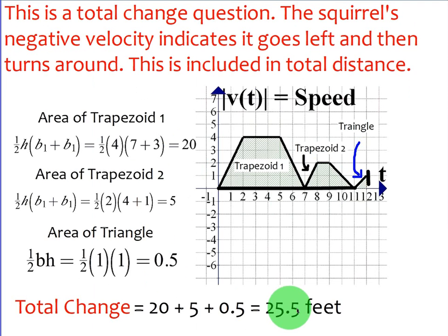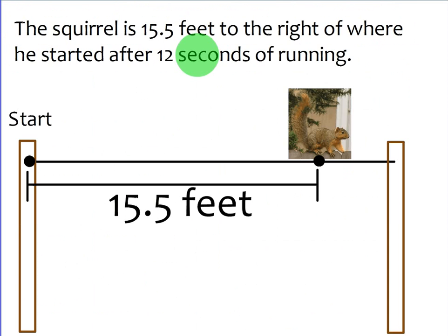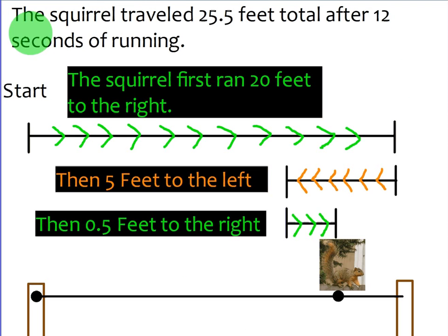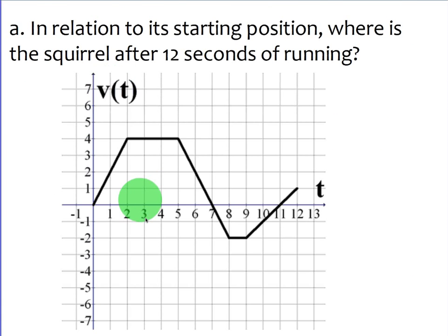So it's the same exact math, except notice that middle trapezoid is now positive 5. When we add it up, we get 25.5 feet. It was a different answer that we got than when we got the displacement of 15.5. So let's go ahead and take a look and see the difference. The squirrel traveled 25.5 feet total after 12 seconds of running. So it started out, the squirrel ran 20 feet to the right, which was indicated by that first positive trapezoid right here.